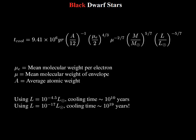So let's look at a couple of features of this equation. First, the dependence on A implies that cores made up of heavier elements cool faster than cores made up of lighter elements.